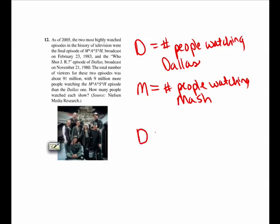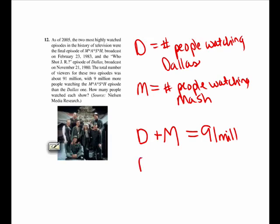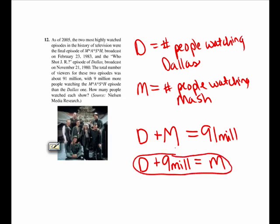We were given two different relationships between D and M. The total number of people watching both episodes added up to 91 million, so D plus M equals 91 million. The second relationship says that 9 million more people were watching MASH, so if you take D and add 9 million, you get M. That means M equals D plus 9 million.